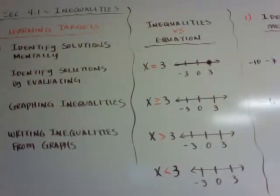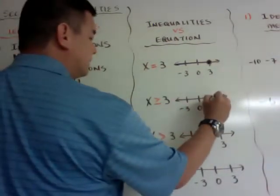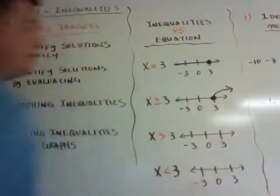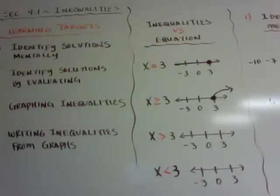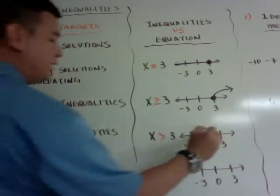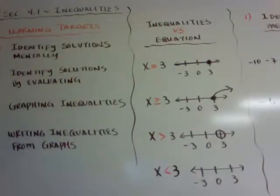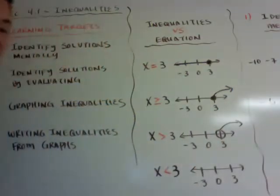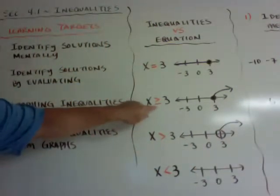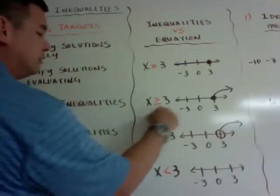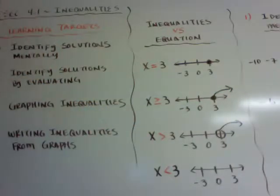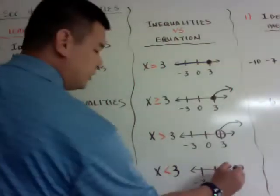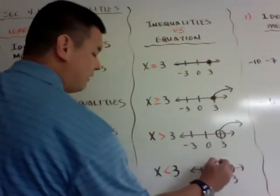Now we're going to say x is greater than or equal to 3. So 3 is still a solution, but every number to the right of it or greater is also a solution. If we have x is just greater than 3, it does not include 3, so we do an open circle. But it's everything greater than 3 — every number to the right of 3, not including 3. When you have a 'less than or equal to,' you color in the circle because it equals that number as well. If it's x is less than 3, you just do an open circle and shade every number to the left.